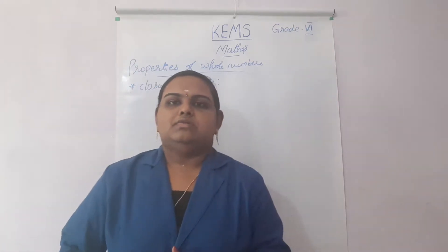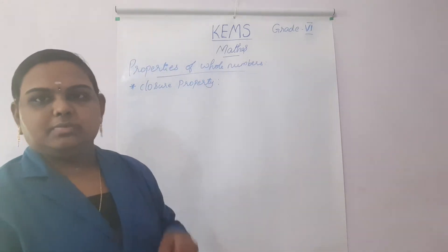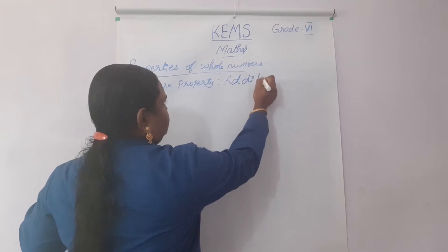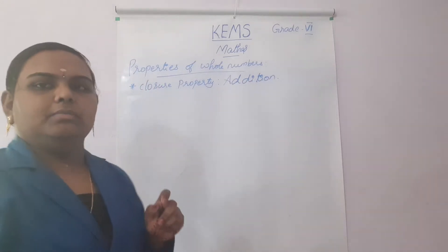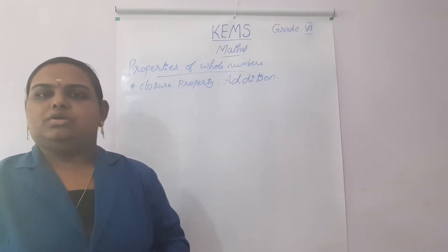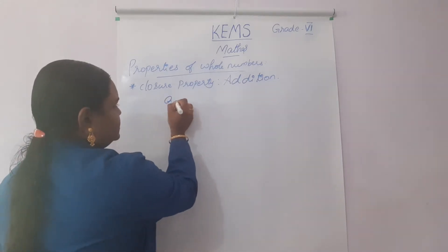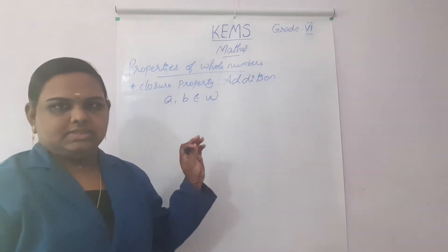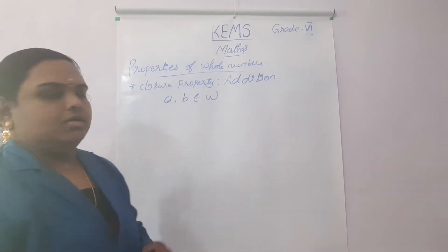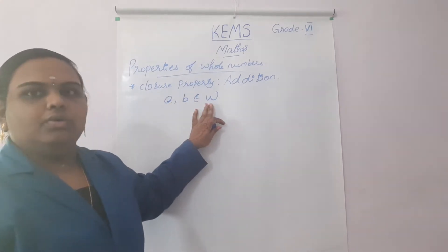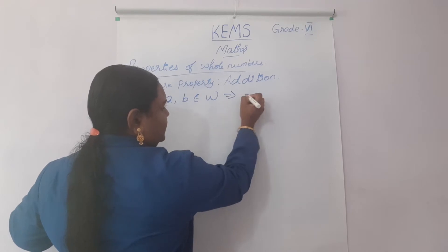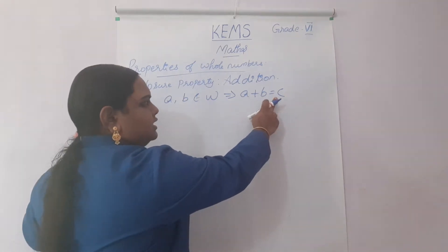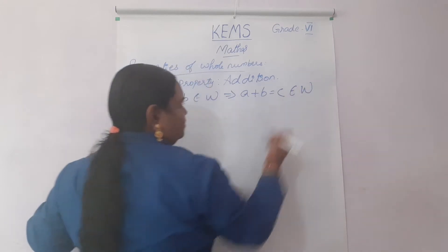There are many properties. The first property is the closure property. For closure property, I am going to take addition. I am going to check whether whole numbers are closed under addition or not. The condition is: if A and B belong to W (whole numbers), then A plus B should equal C, and C should also belong to W.